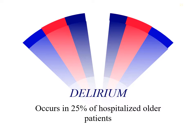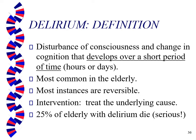Our other major neurocognitive disorder: delirium. Also seen in about a fourth of all hospitalized older patients. Delirium develops in a very short period of time — sometimes just a few hours or days — and is most common in the elderly, though not only in the elderly. It's reversible in most instances, but you have to find the underlying cause — there's no generic treatment for delirium. You have to find and treat the underlying cause, and that's what takes care of the delirium. Twenty-five percent of elderly patients with delirium will die, so it's very serious.